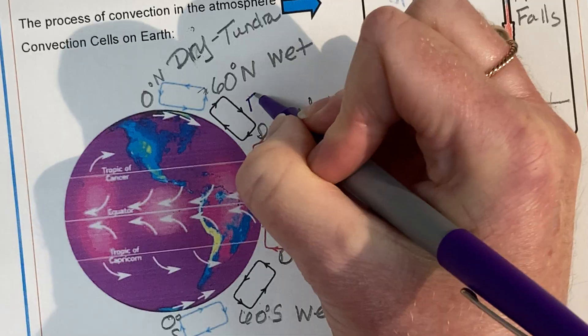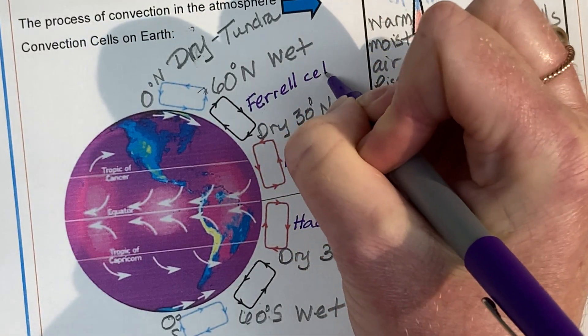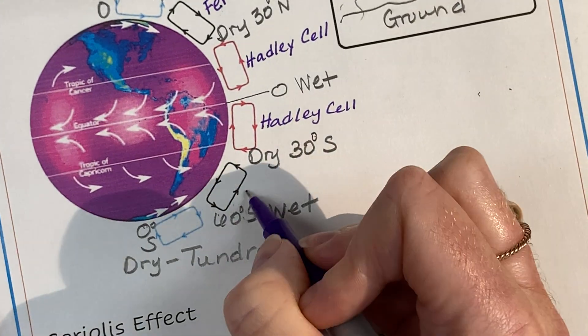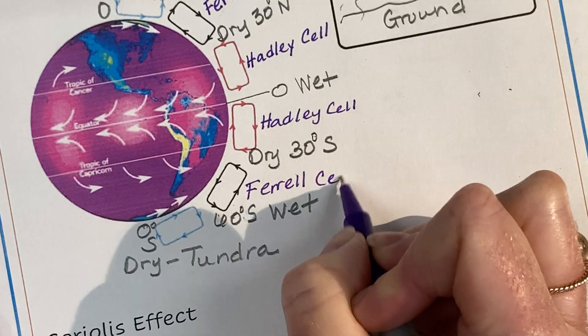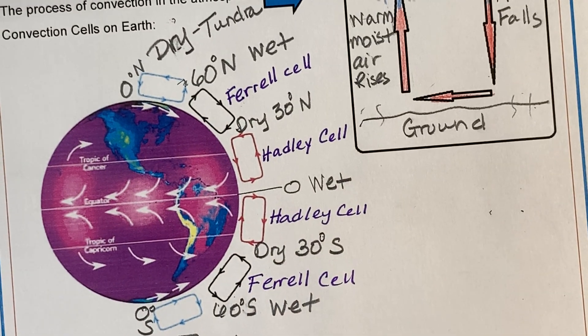Then the next ones are called Ferrell cells. These were named after the people who discovered them, Mr. Hadley, Mr. Ferrell. Down here you also have a Ferrell cell. The cells that are between 30 and 60 latitude are called Ferrell cells.